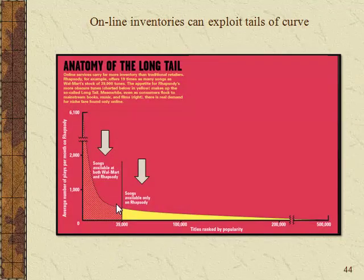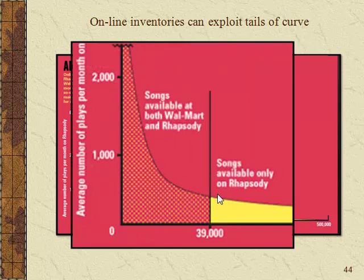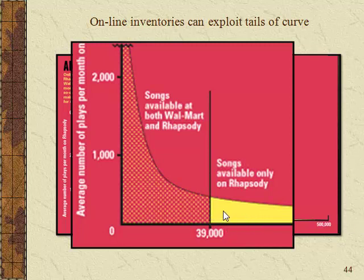Another way of illustrating this comes from Wired magazine, discussing how internet companies can exploit more parts of the market than brick-and-mortar stores. Walmart doesn't want to carry every last thing because inventory costs are too high. But a music service like Rhapsody or iTunes can afford to offer the full distribution — selling across the entire country and globe, making it profitable to carry even very small, esoteric, less popular forms of music.